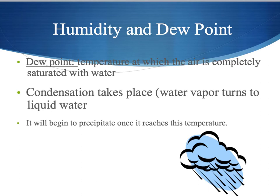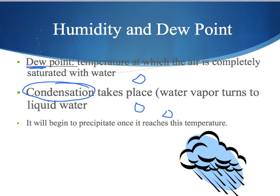One last weather vocab word related to humidity is dew point. Think of dew — that stuff that sits on grass in the mornings. Dew point is the temperature at which air is completely saturated with water, causing condensation: all that water in the air condenses into rain droplets or dew on the grass. So if you're watching the weather channel and the air temperature reaches the dew point temperature, it's going to rain.